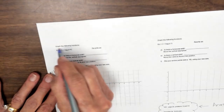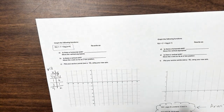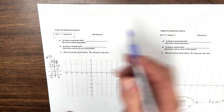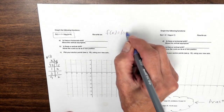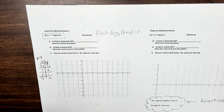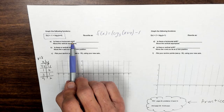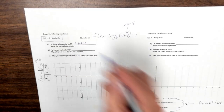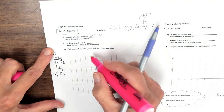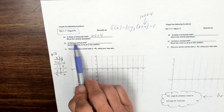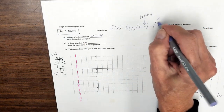Now we're going to go the other way — we've got an equation and we need to graph it. I didn't like the negative one's position, so I'll rewrite this as f(x) = log base 3 of (x + 4) minus 1. Before graphing, answer these questions: is there a horizontal shift? Yes — we're going left 4, so move the vertical asymptote left 4. Is there a vertical shift? Yes — we're going down 1.